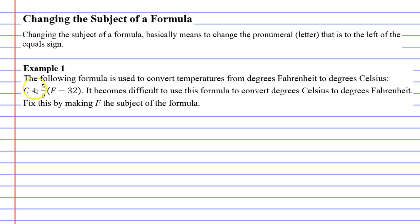So if we look at example 1, it says the following formula is used to convert temperature from degrees Fahrenheit to degrees Celsius. This is the formula here. We discussed it earlier. It becomes difficult to use this formula to convert it the other way, to convert degrees Celsius to degrees Fahrenheit.